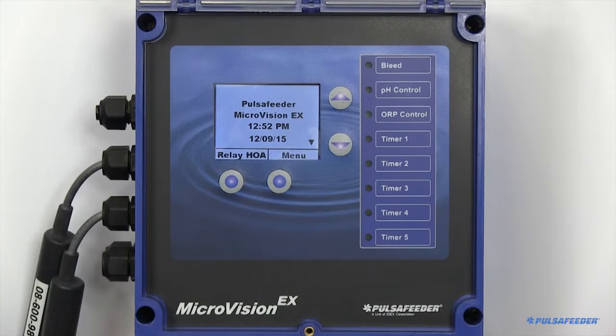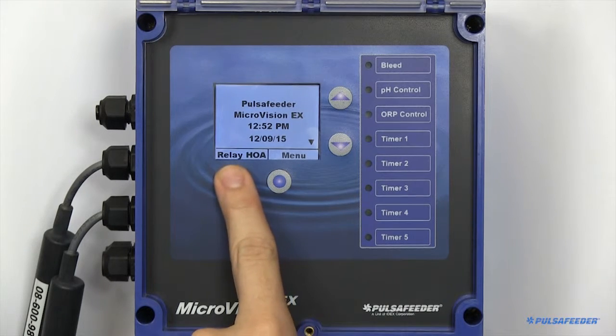The HOA function, or hands-off automation, is a useful feature for servicing your pumps or troubleshooting any electrical problems. To access the HOA screen, you can simply press the bottom left button from the home screen.